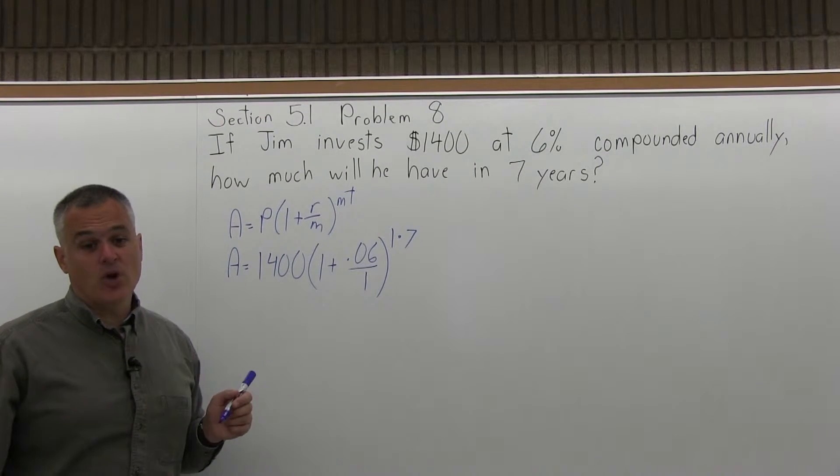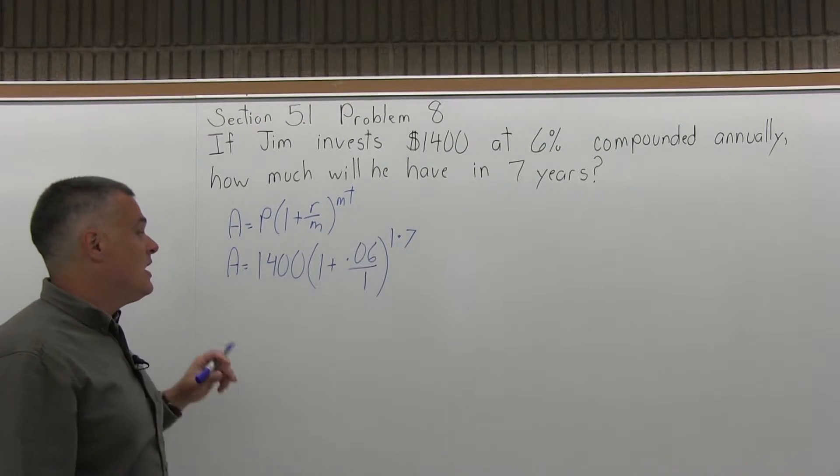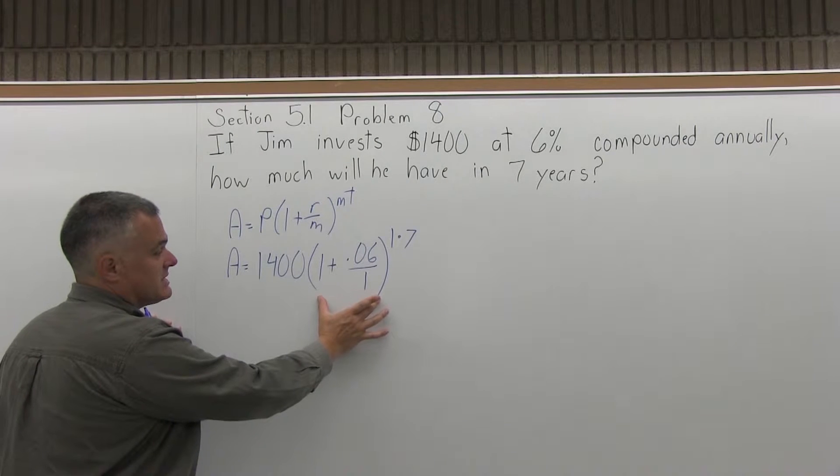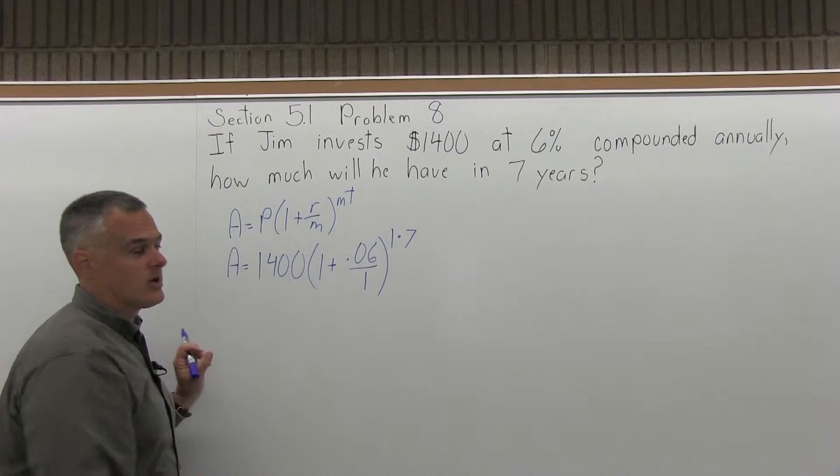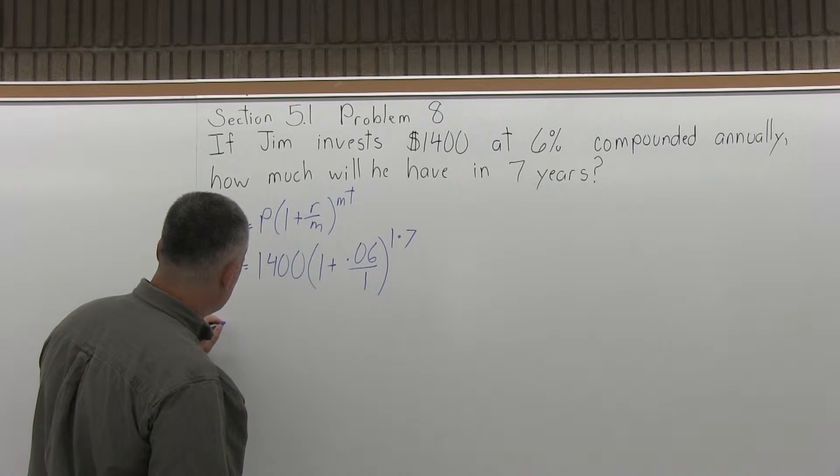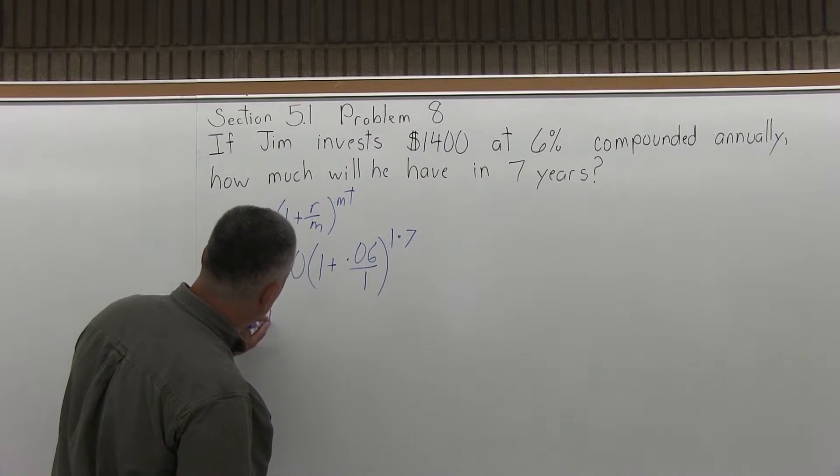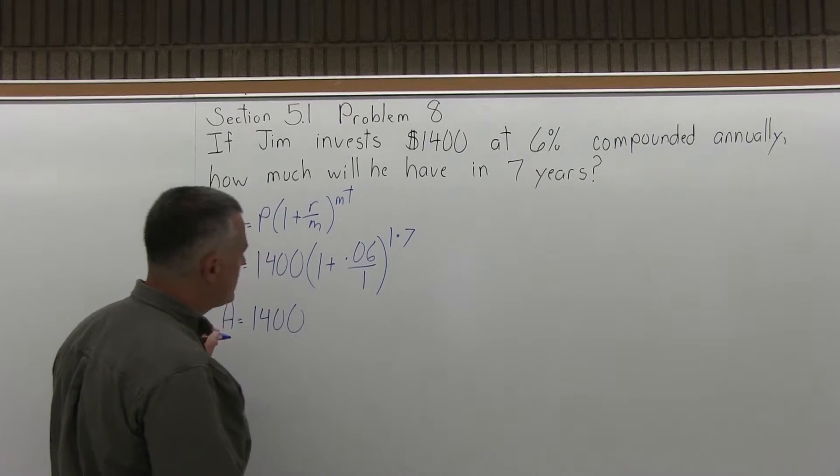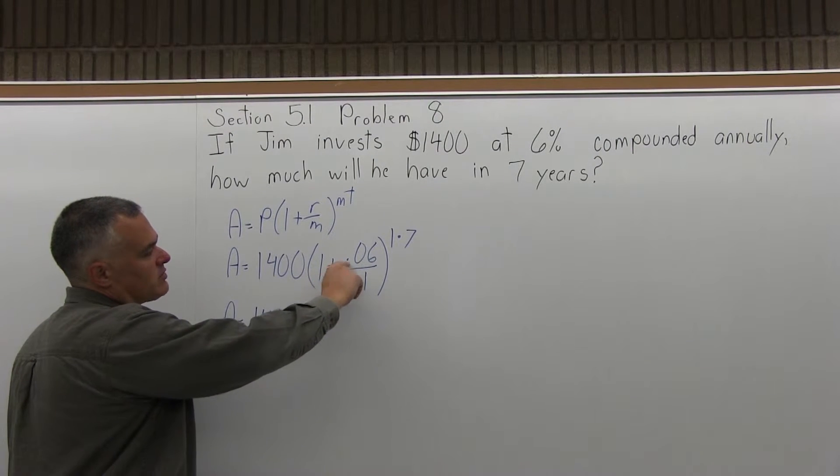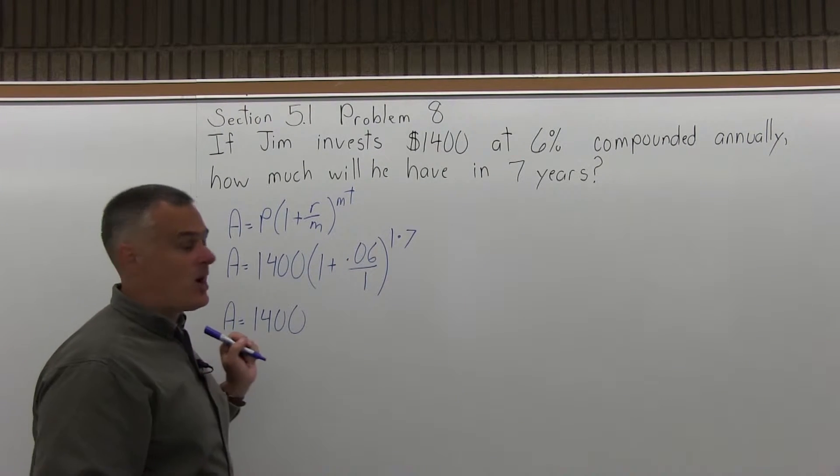Now I start the computation. I fill in the formula. The formula has some parentheses. In any type of math, you need to do the work in parentheses first. So the next step in the process is going to have A equals 1,400 times, now in parentheses, I have 1 plus 0.06 divided by 1.